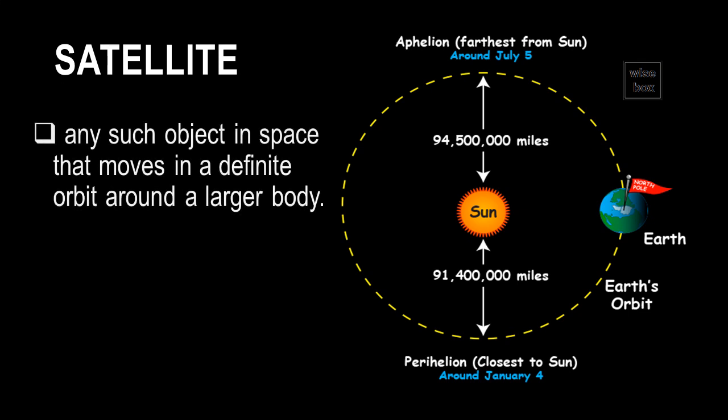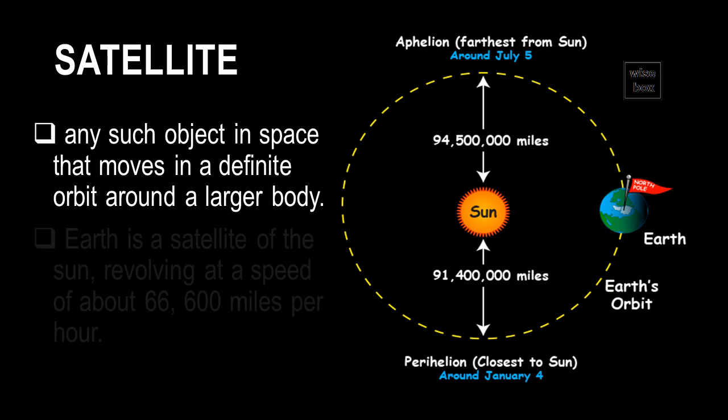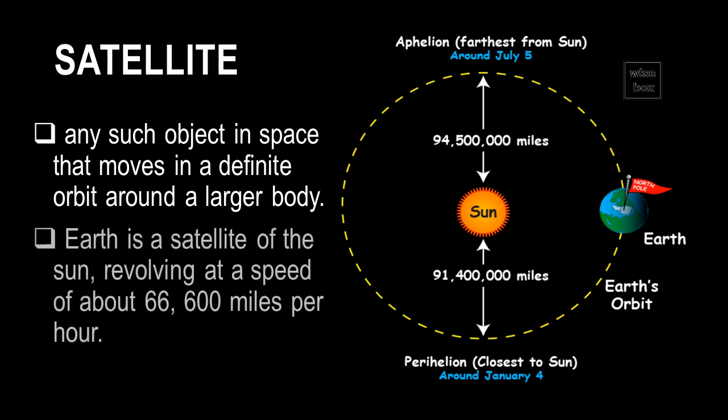A satellite is any such object in space that moves in a definite orbit around a larger body. Earth is a satellite of the Sun, revolving at a speed of about 66,600 miles per hour.